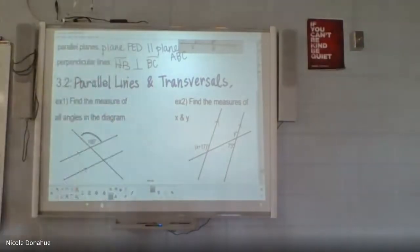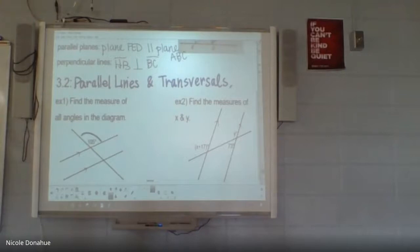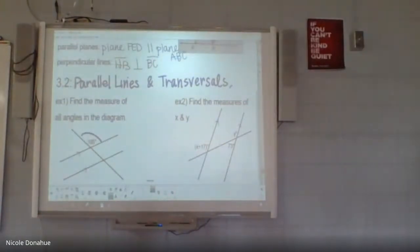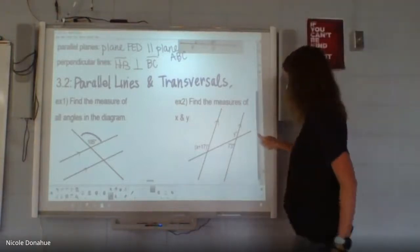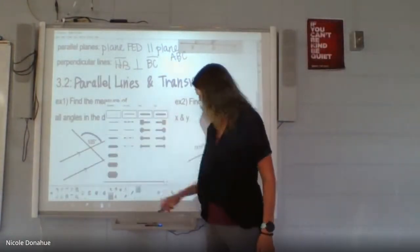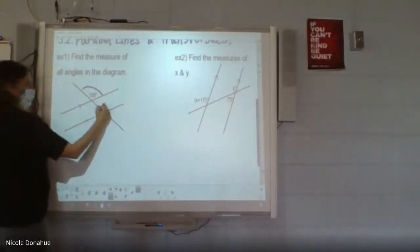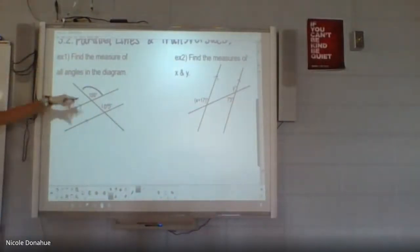So in section 3-2, this is where we got into the parallel lines with the transversals. Notice these lines are all parallel here. So example one asks you to find all the measures of the angles in that diagram. So if you can label all those different angles, you should be able to do that based off of knowing that 105 degree angle here. Based off of this, we should be able to label all of them.